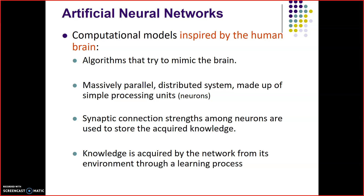Synaptic connection strength among neurons are used to store the acquired knowledge. Joh knowledge store hootay hai Artificial Neural Networks me, joh strength hai synaptic connection ki, woh weightage level pe decide hootay hai. Knowledge is acquired by the network from its environment through a learning process. Network se knowledge ko extract karne ki liye learning process use ki jati hai.